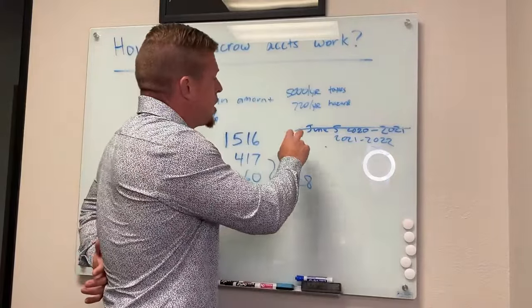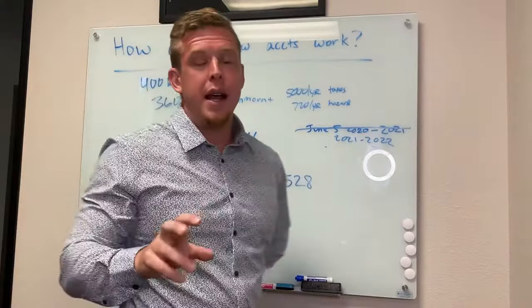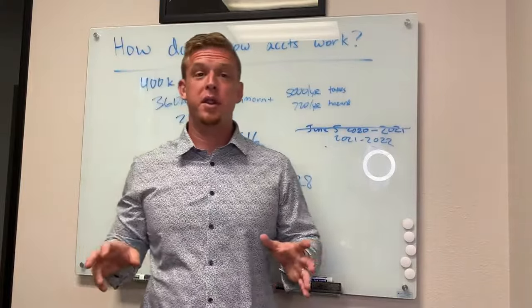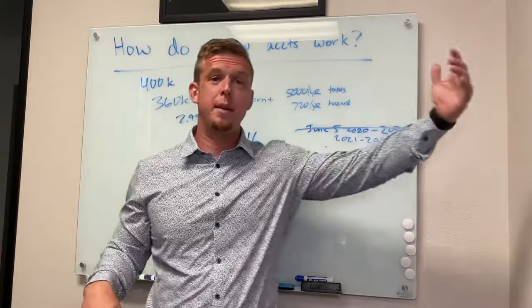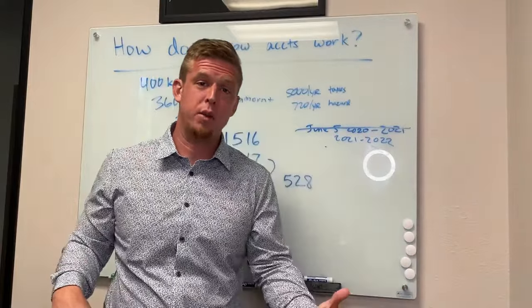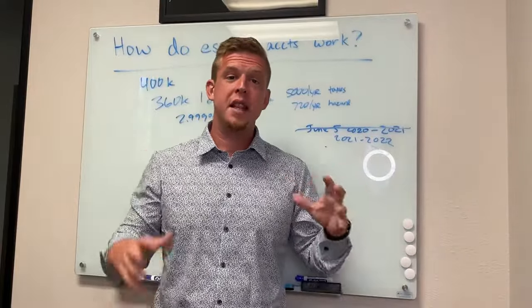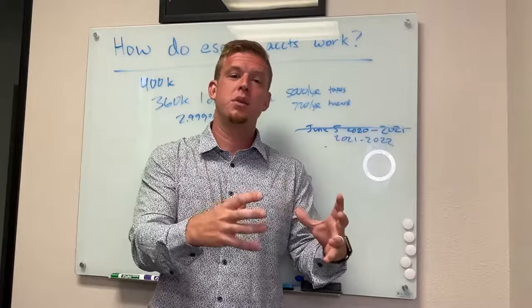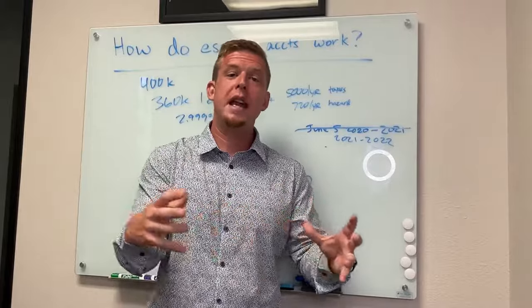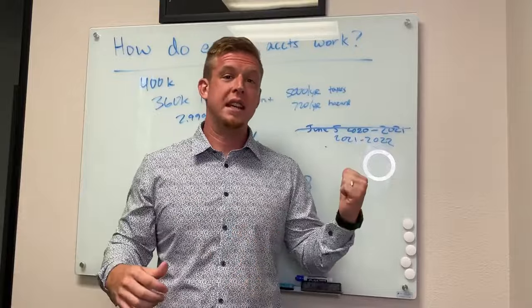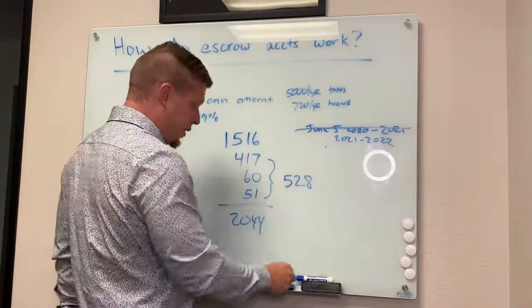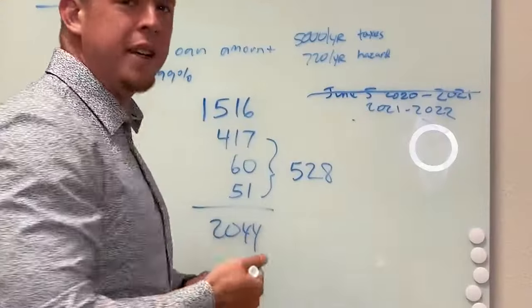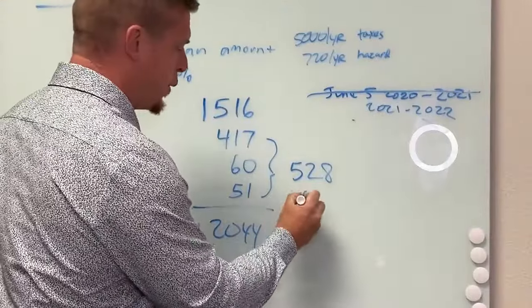Another thing is every year they'll do an escrow analysis. And a lot of folks deal with this too. They go, what the heck is this? My mortgage went up $56 or went down $21. What happened? They do an analysis. They can't hold more than a certain amount. They can have a little bit in reserves. So a little bit of buffer, but they can't have an extra $2,500 sitting in this account. So they analyze it and say, hey, based on our analysis, we might not need $528 a month. We only need $514.